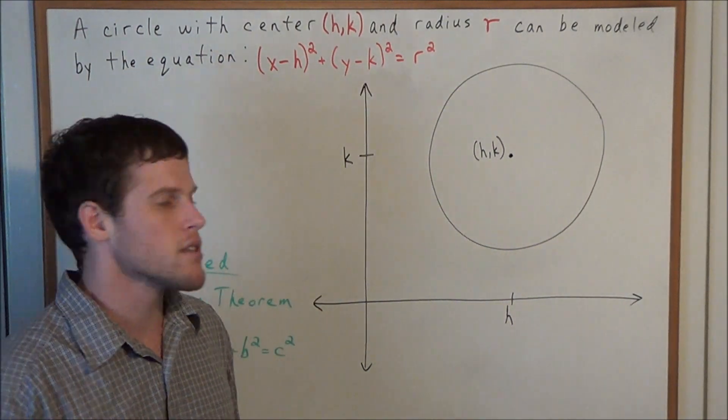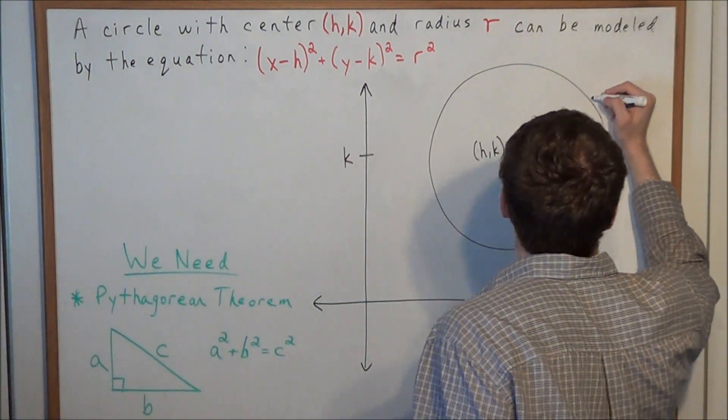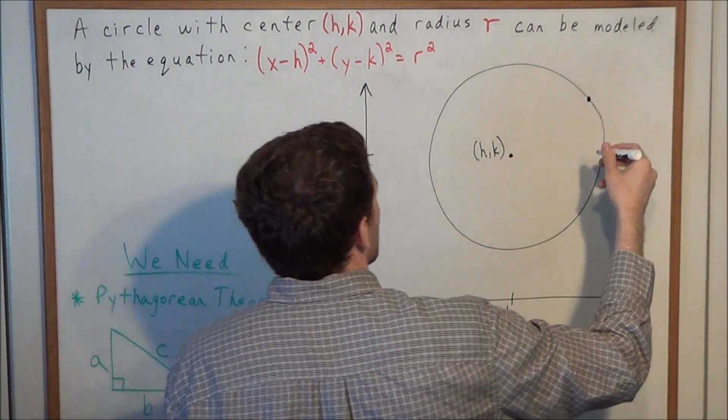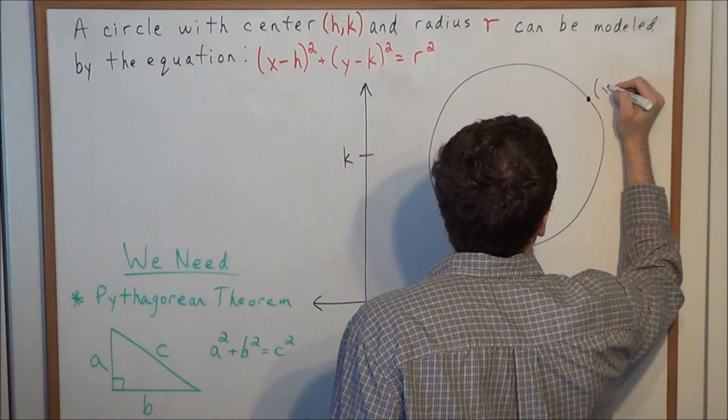So next I want to look at a random point on the circumference of the circle. So we have some point, let's say we label this point here and we can label the coordinates (x,y).